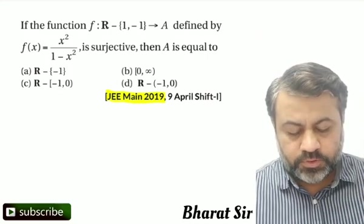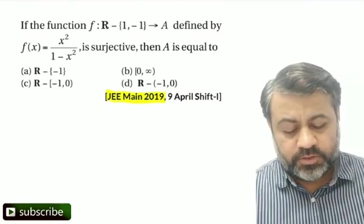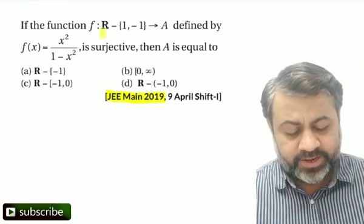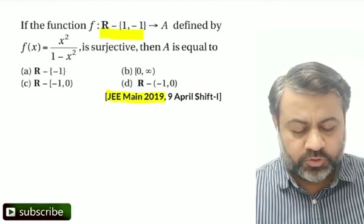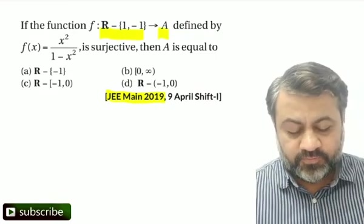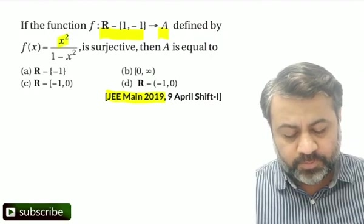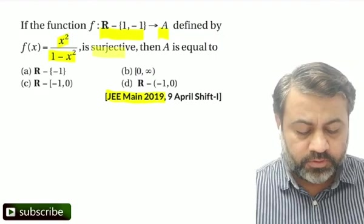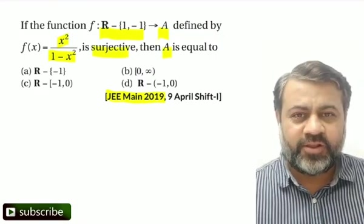We have a function which is defined from entire real line except 1 and minus 1 to set A. Function is defined as f(x) = x²/(1-x²). The question says the function is surjective and we want to find the value of A.